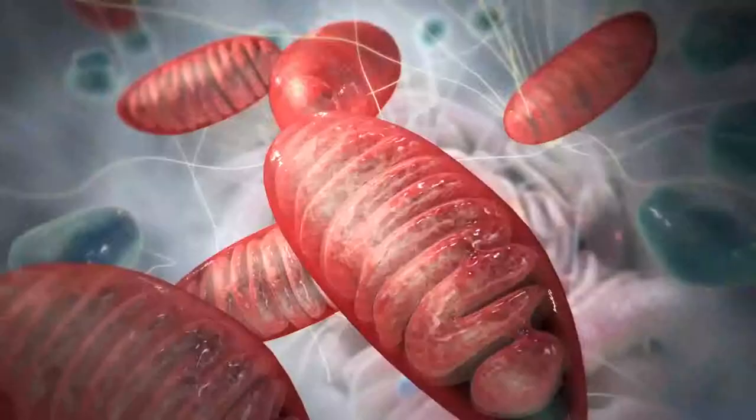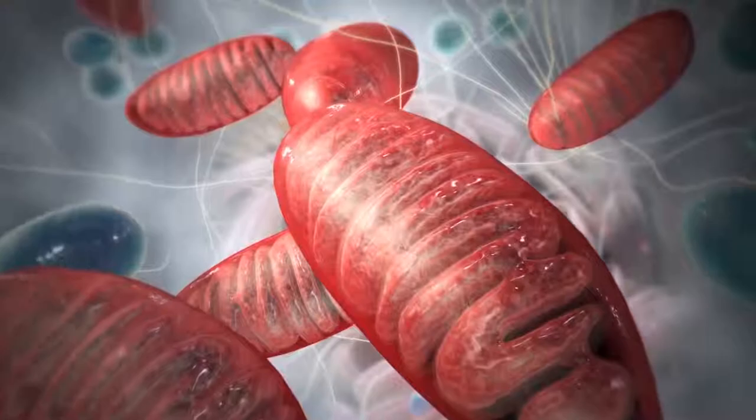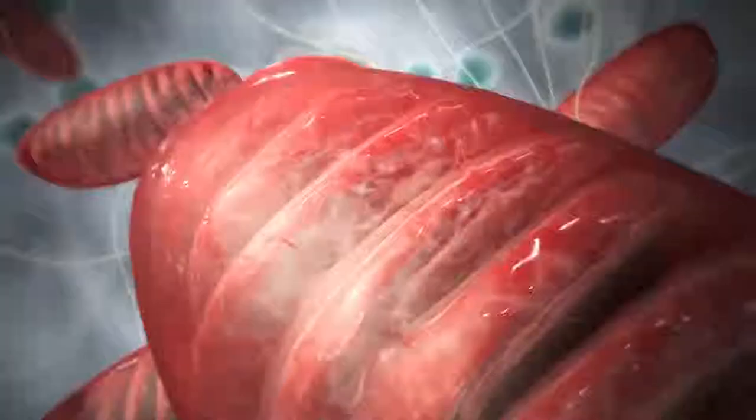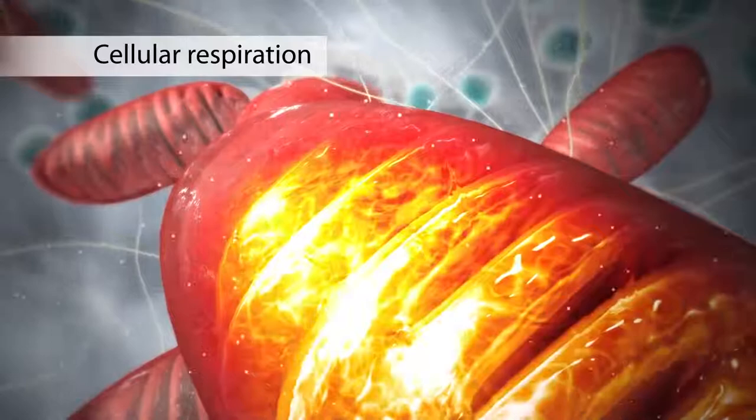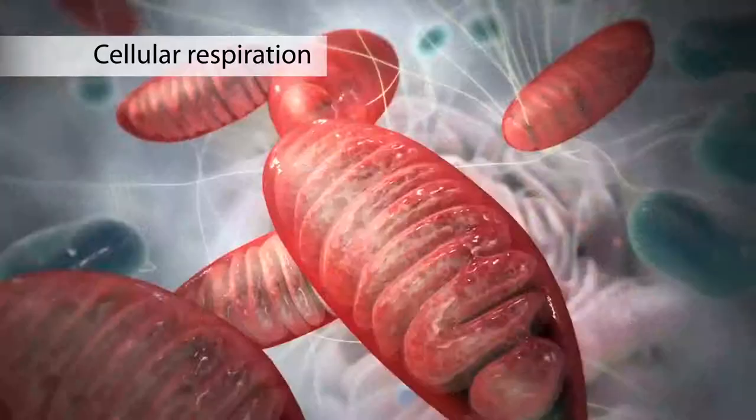The mitochondrion is an organelle that is the powerhouse for both animal and plant cells. During a process called cellular respiration, the mitochondria make ATP molecules that provide the energy for all of the cell's activities. Cells that need more energy have more mitochondria.